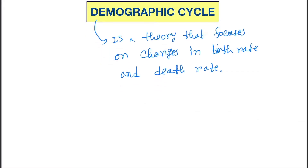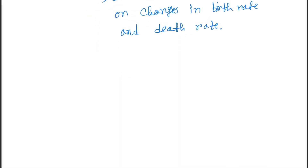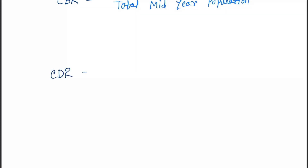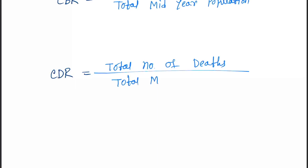There are two indices: the CBR, that is the crude birth rate — it is the total number of births divided by total mid-year population into thousand — and another one is the CDR, that is the crude death rate, which is the total number of deaths divided by total mid-year population.